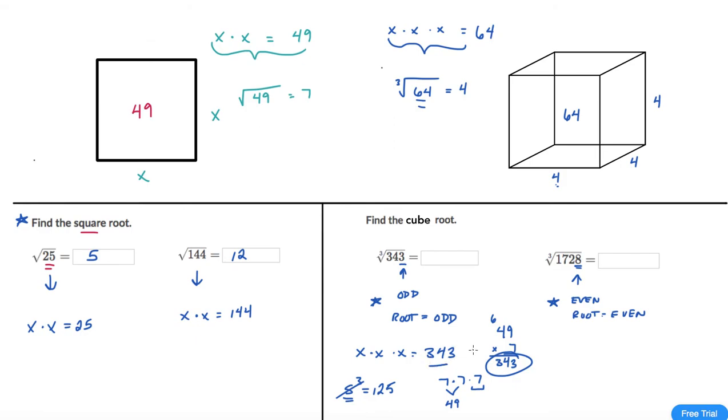Okay. So I got lucky here. I only had to guess one time but I did have a guided guess. I knew that it needed to be odd and I knew that it needed to be slightly above 5. So I arrived at 7 is the cube root.